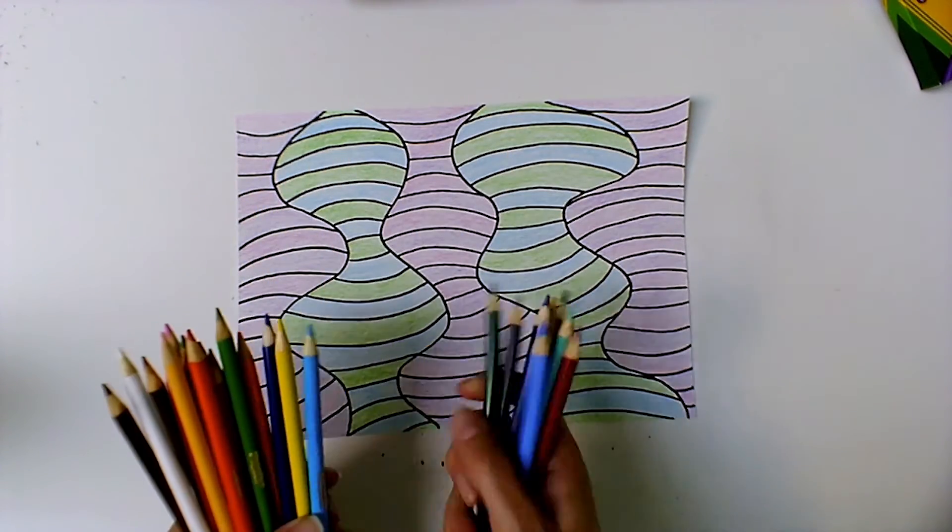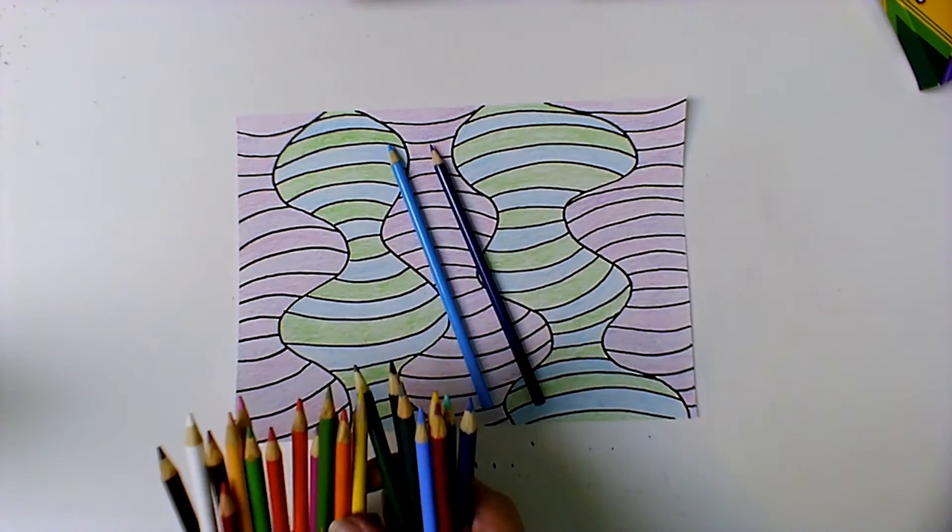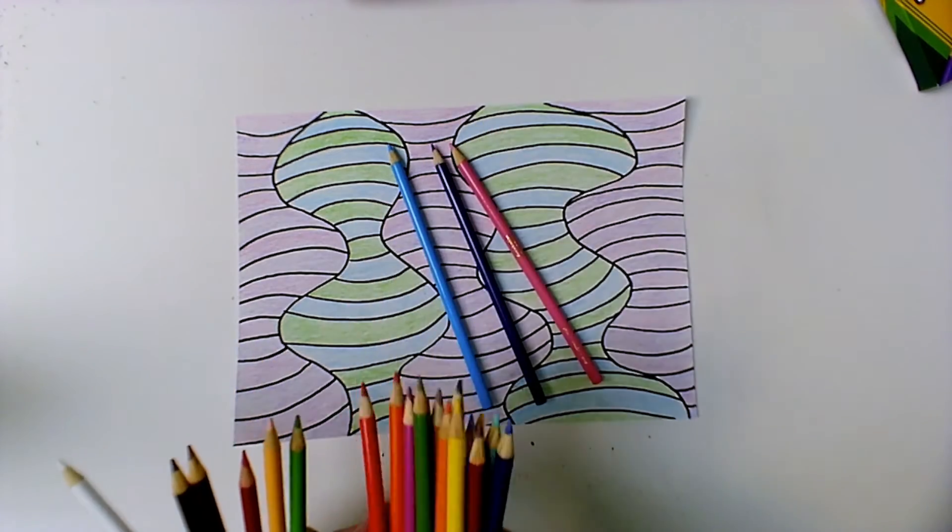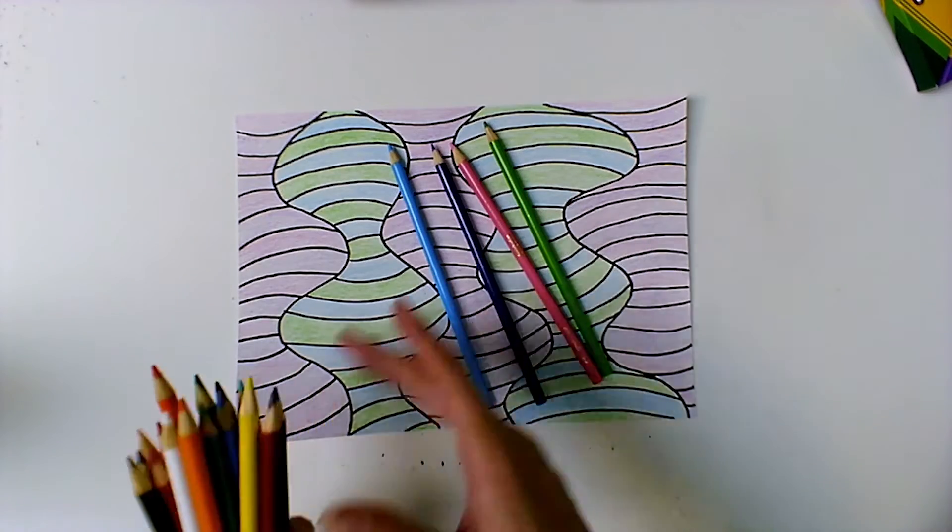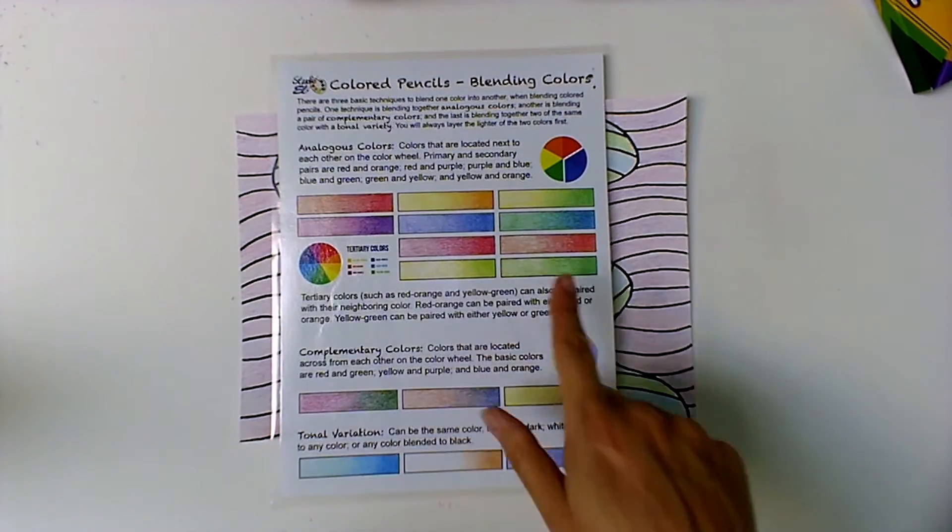So for the colored pencils you want to find the same colors that you used to start. And then you also want to do a darker version of that. And to help you I put together these sheets, these color blending sheets.